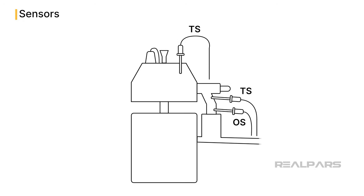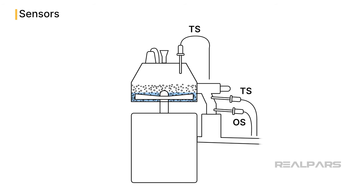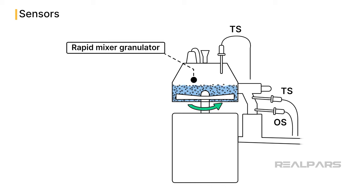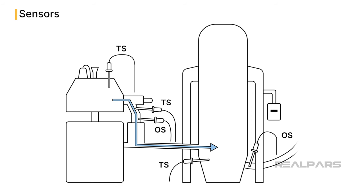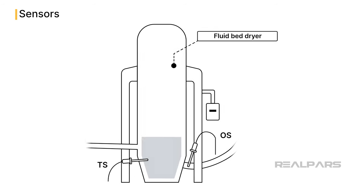Initially, envision a sizable mixer, much like a dough mixer one might find in a bakery. Into this, we pour the powdered ingredients, accompanied by a slight amount of liquid. This mixer, named the Rapid Mixer Granulator, combines everything until we attain a consistency similar to wet dough. Subsequently, this wet dough requires drying. Picture it being transferred to a hefty drying apparatus, namely the fluid bed dryer.